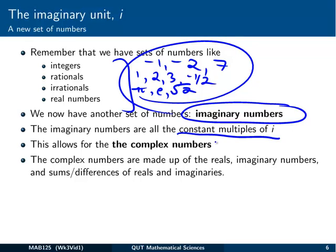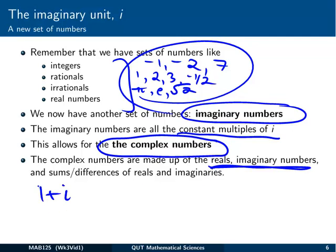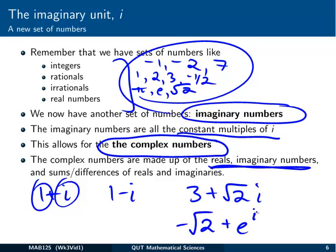That allows us to bring up this new set, a big sort of all-encompassing set called the complex numbers. And they're not called complex because they're hard. They're called complex because they're actually a complex of two pieces. They're made up of real and imaginary numbers, basically, put together. So it's sums and differences of reals and imaginaries. So, something like 1 plus i, that's a real number, plus an imaginary number, 1 minus i, 3 plus the square root of 2i, or minus the square root of 2 plus e times i. So, those are complex numbers, numbers made up of the sum or difference of real and imaginary numbers. And that's the kind of numbers we're going to be dealing with for the rest of this topic.